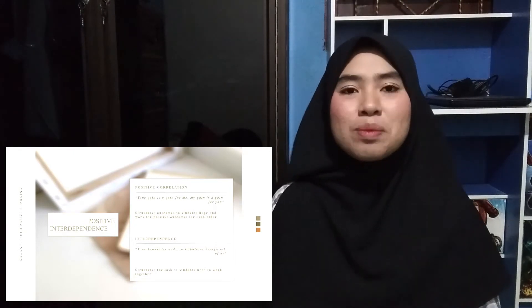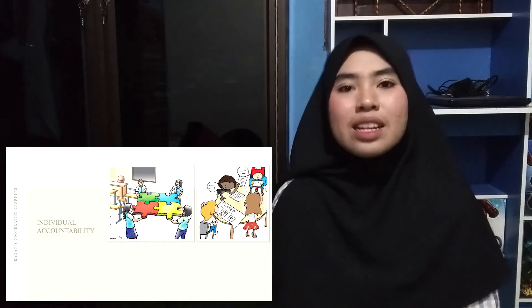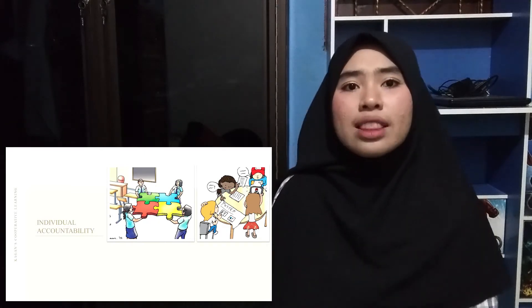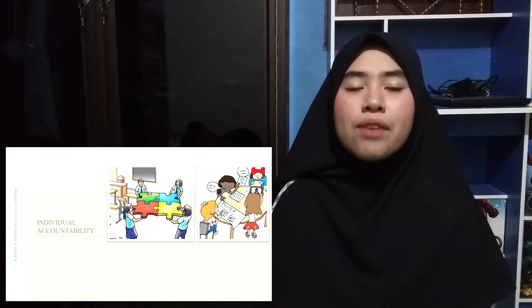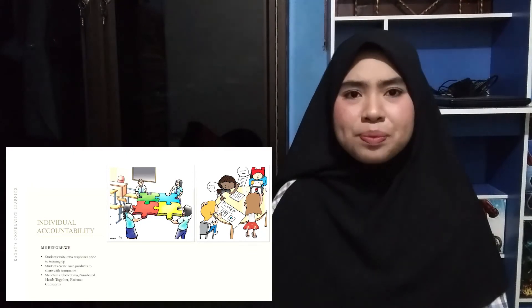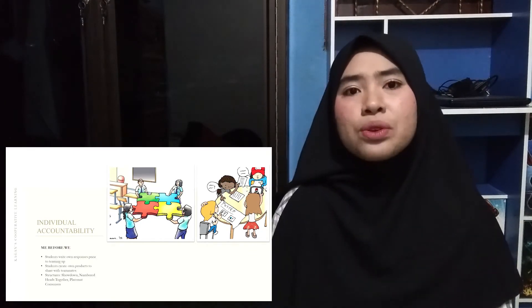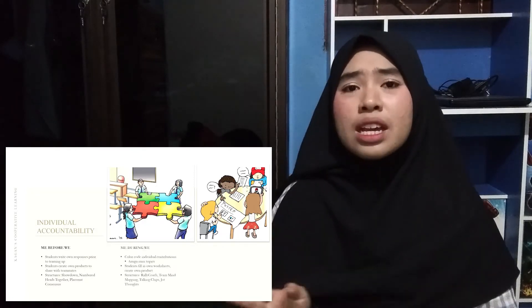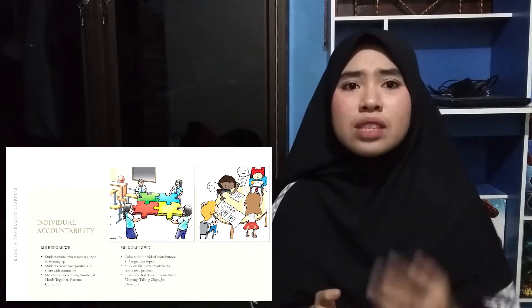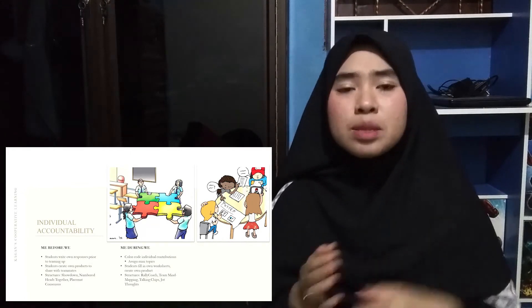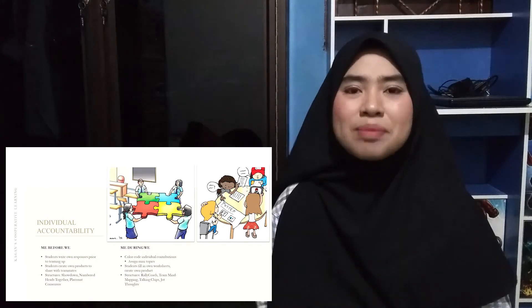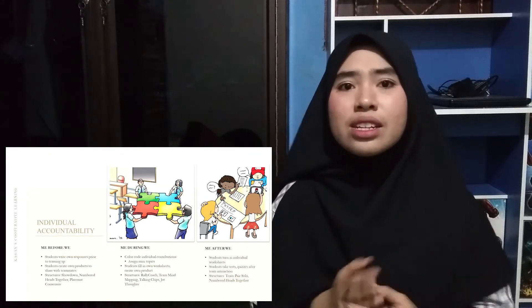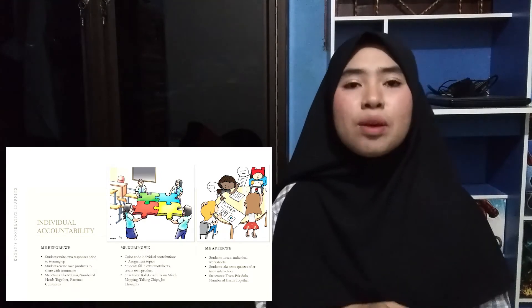Interdependence structures the task so that students need to work together. The next principle is Individual Accountability. The responsibility of each individual in conducting cooperative learning is needed to achieve maximum results. There are three rules every student must consider: first, 'me before we' — the efforts of each individual to create something first before distributing to group members; second, 'me during we' — the process when students perform their respective assignments within the group; and third, 'me after we' — showing or submitting results and evaluating in the form of a test.